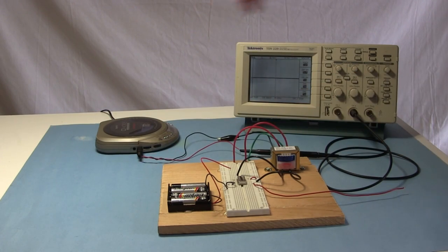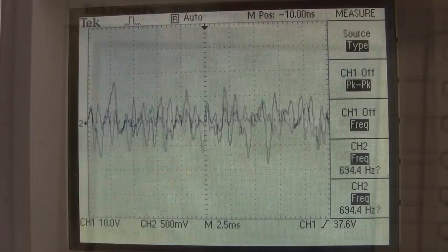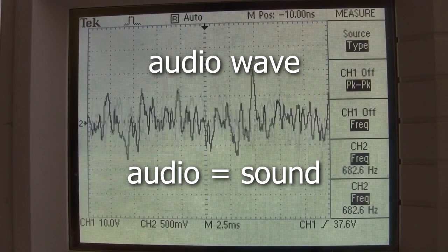If I connect my oscilloscope to the output of my CD player, I see that the waveform it's putting out looks like this. Pretty random looking. That's called the audio wave. Audio means sound.